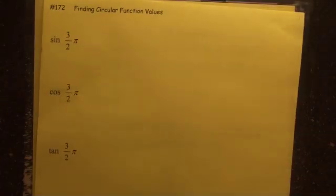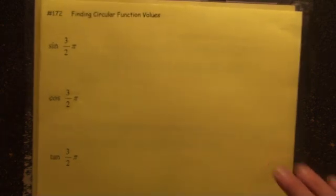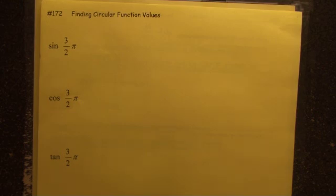172. Sine of 3 pi over 2. Now, guys, here's what's awesome about this. The denominator, we've talked about this in other videos. The denominator tells you what the reference angle is. What's 180 divided by 2? Bam. 90.